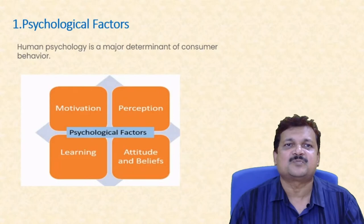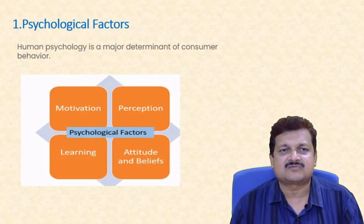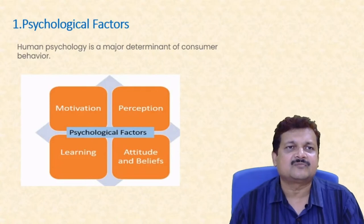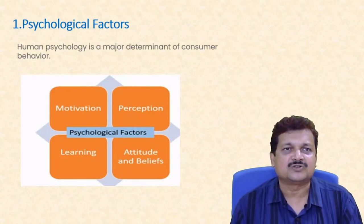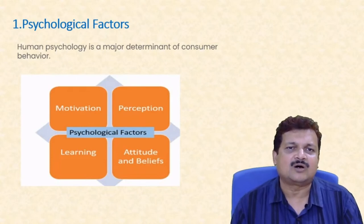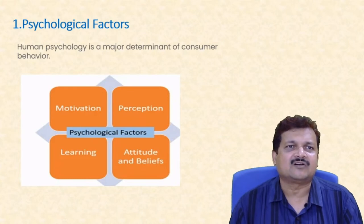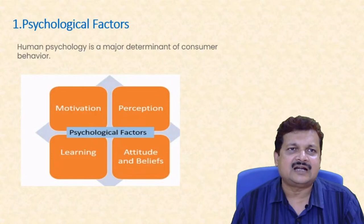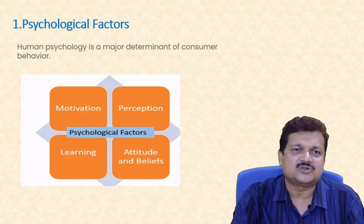Beliefs are a long-term process — changing a belief takes much more time. For example, older people still using 3G phones are not willing to switch to Android smartphones, believing it is not essential when their only need is calls and SMS. Beliefs are deeply held and do not change overnight. These are all psychological factors affecting whether a customer selects a particular brand or product.